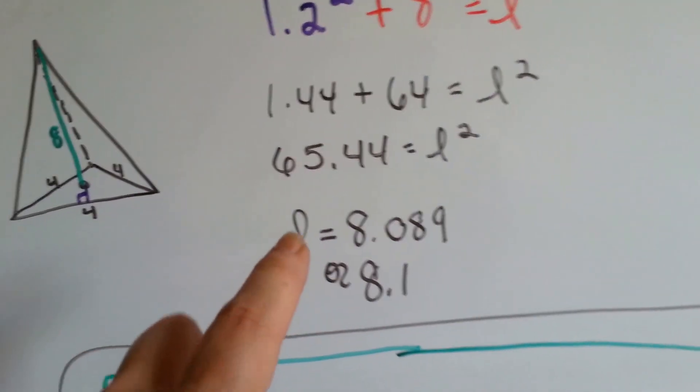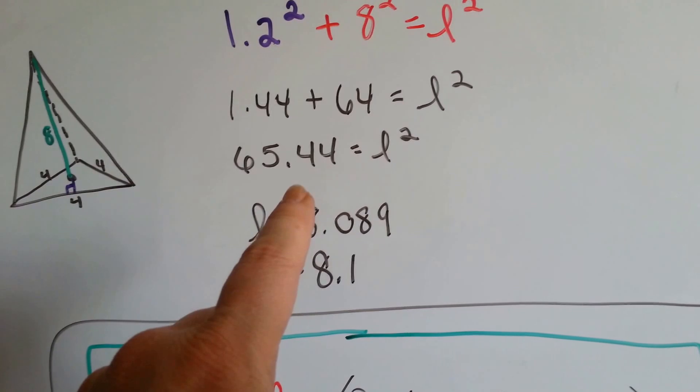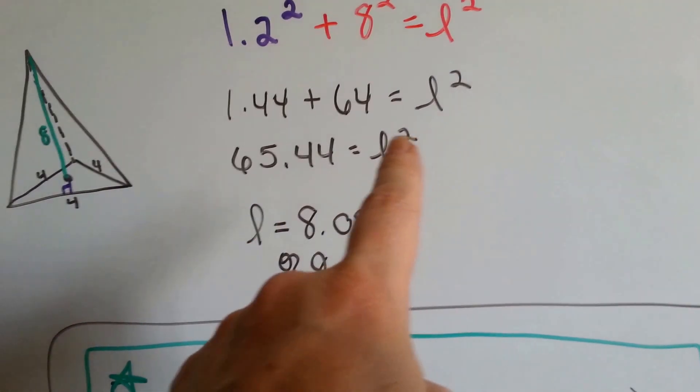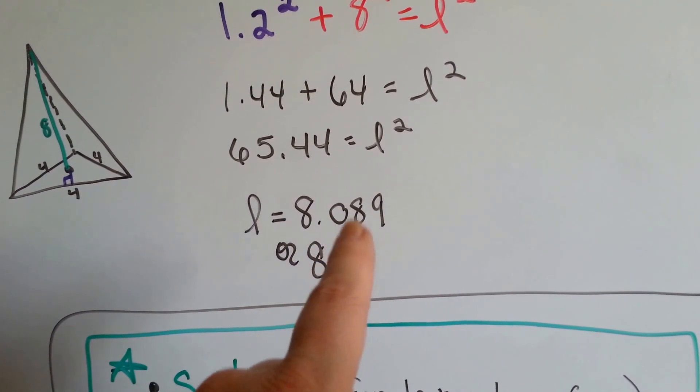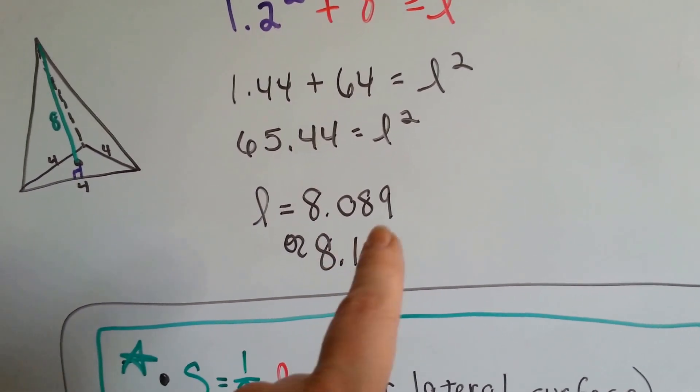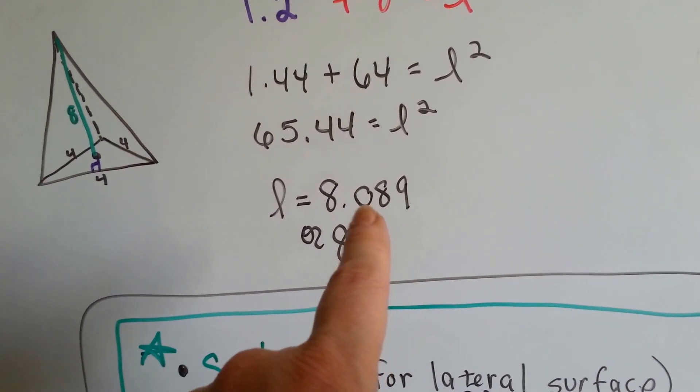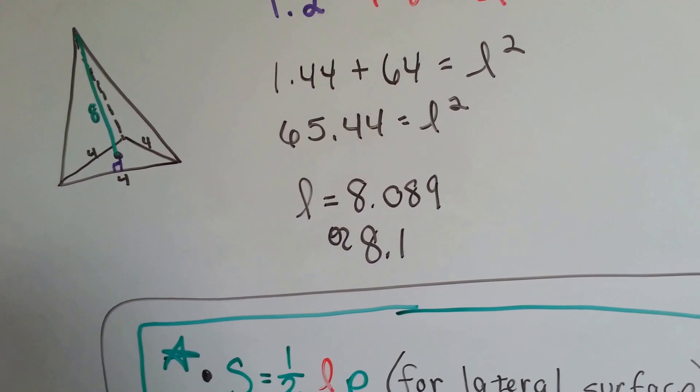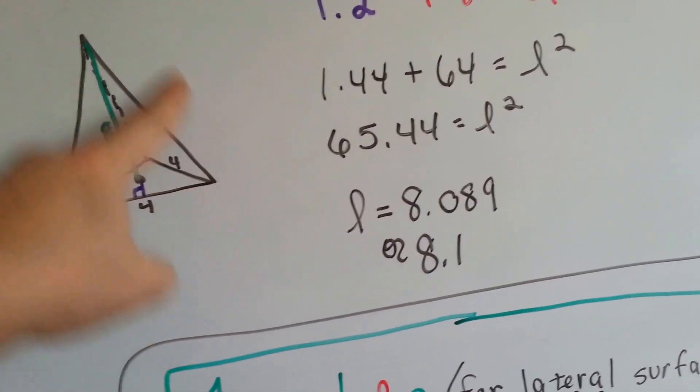So now what we need to do is find out what the square root of 65.44 is so that we can take away this square sign and we find out that it's 8.089. So I'm going to say it's 8.1 just to make it round up. This 8 is going to make the 0 turn into a 1 and it's going to fall off. So now we've got 8.1 for a slant height right here.